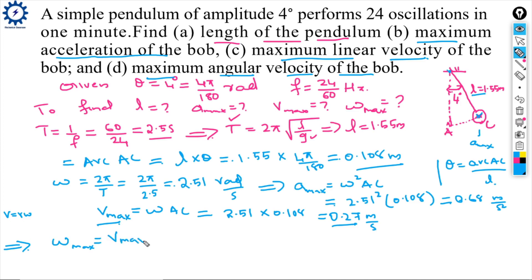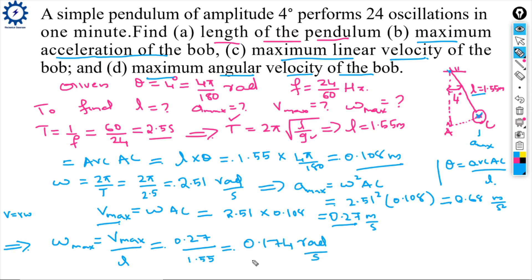Maximum angular velocity = 0.27 / 1.55 ≈ 0.174 radians per second.